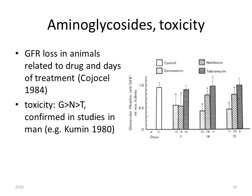However, these drugs are not only very effective but also very toxic. In this study, animals were treated with gentamicin, netilmicin, and tobramycin. The gentamicin- and netilmicin-treated animals lost about half of their renal function in seven days, while the tobramycin-treated animals had lesser renal toxicity.